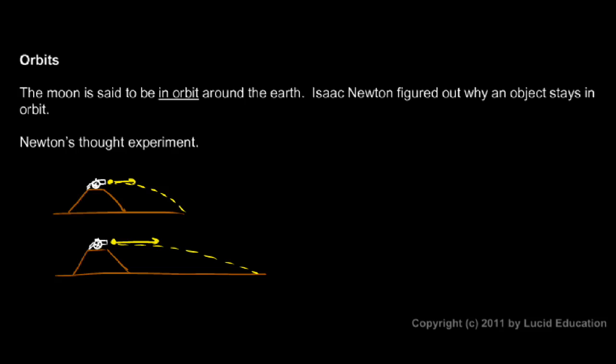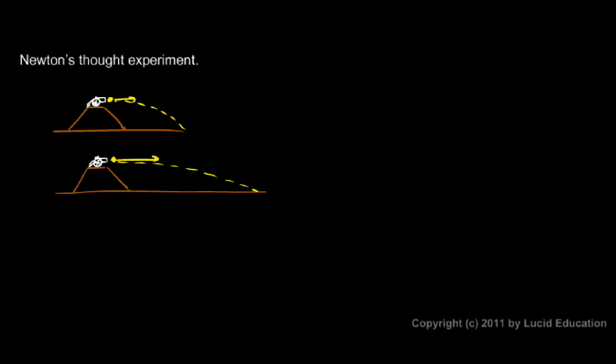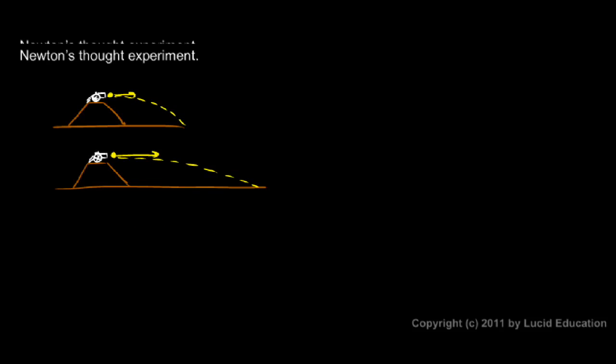So let's imagine the cannonball is fired so fast that it covers so much horizontal distance that the curvature of the Earth can no longer be neglected realistically. Let's suppose this cannonball is shot at such a high speed that it goes so far that it covers an appreciable amount of curvature of the Earth, an appreciable amount of the Earth's surface, such that we have to take the curvature into account.